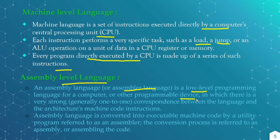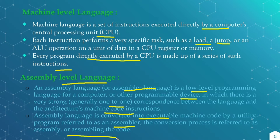Or for programmable devices. In this there is a one-to-one correspondence between the language and the machine code instructions. And this assembly language is converted into executable machine code by utility programs which are referred to as the assembler. This conversion process is referred to as assembling the code, or assembly. So assembly level programming language must be converted into executable machine code.